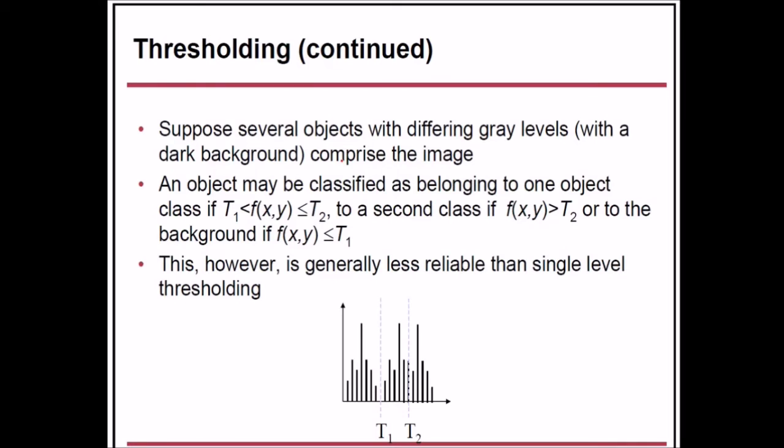Suppose several objects with different gray levels with certain dark backgrounds comprise the image. An object may be classified as belonging to one object class if it lies between threshold T1 and T2, a second class if it is greater than T2, or the background if it is less than T1. So one object lies between 0 and T1, then T1 and T2, and then T2 to the final point. This, however, is generally less reliable than single level thresholding.